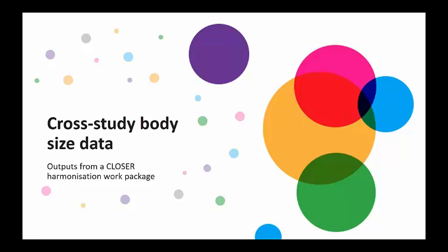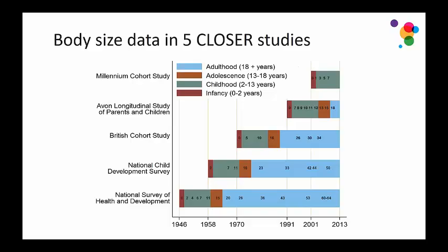The main thing I want to talk about today is the harmonized CLOSER Body Size dataset. CLOSER has a number of harmonization work packages and has produced several harmonized datasets. Specifically relating to body size, the data contains five of the CLOSER studies: the four nationally representative British birth cohorts, to track how body size changes across life and according to different generations. ALSPAC was also included to fill the 30-year gap between the 1970 and 2001 birth cohorts.